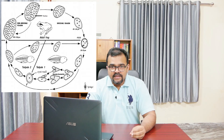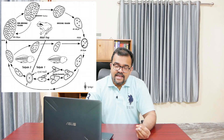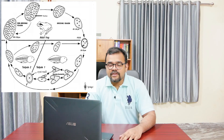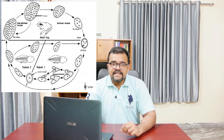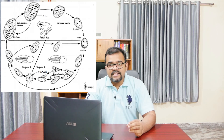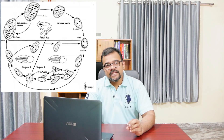The daughter cells become encysted and pass out of the host into the water, from where they are swallowed by tadpoles. The cyst then dissolves in the intestine of the tadpoles, and the cell divides to form uninucleate microgametes and macrogametes. These anisogametes fuse to form a zygote, and the zygote nucleus undergoes repeated divisions to produce a multi-nucleate adult.